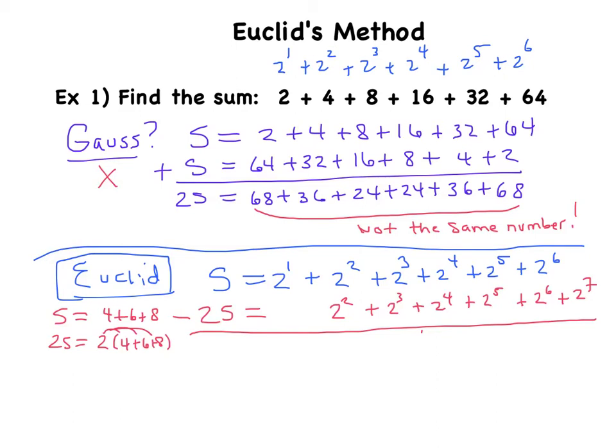What you get is: this is 1S minus 2S, so that is negative 1S. And 2 to the 1 minus 0—there's nothing here—is just 2 to the 1. Then all these terms subtract out to produce 0 until the last one. I have 0, so I'm going to put a 0 here, even though you don't need to. 0 minus 2 to the 7 is going to give me negative 2 to the 7.